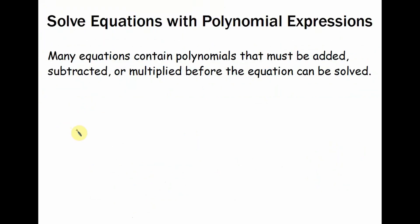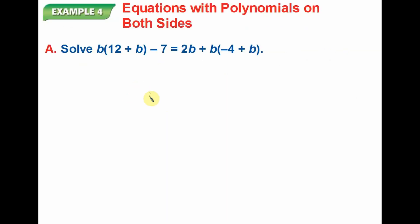When you're solving equations with polynomial expressions, many equations contain polynomials that must be added, subtracted, or multiplied before the equation can be solved. Example number 4, equations with polynomials on both sides. In this case, what we're going to do, first I see multiplication with monomials and binomials. I'm going to distribute. Then I'll be combining the like terms. And last, since you're solving for an equation, at the end I need to have a variable equal to just a number. In this case, it looks like they're using B instead of X.